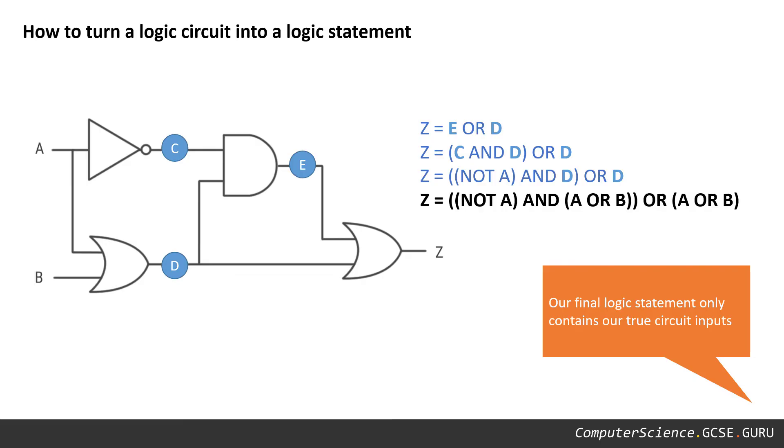That then leaves us with our logic statement. If we check through it, we can see that the only letters that appear in our statement are A's and B's, and that's right because those are our two inputs for the circuit A and B. No other letters exist, so this will be the end of our problem.